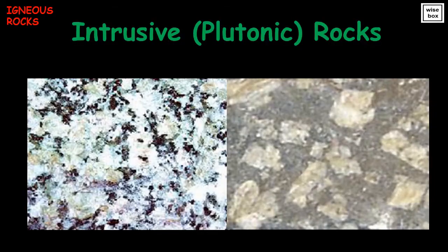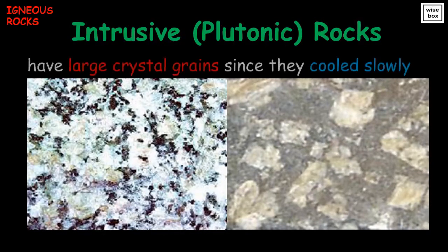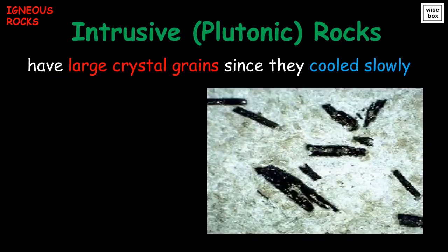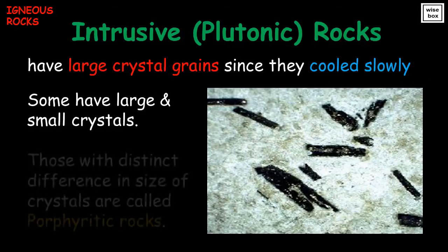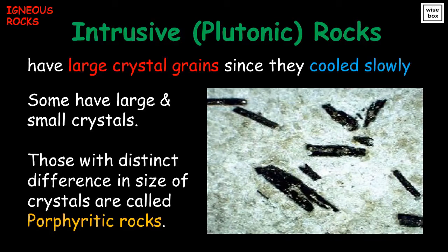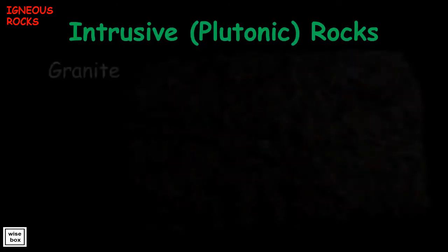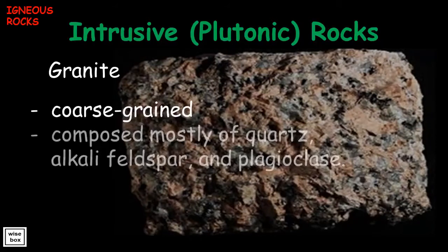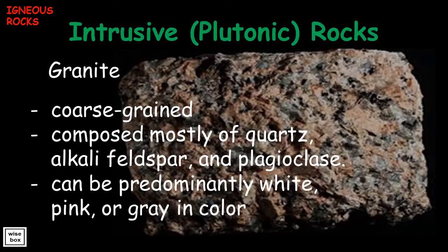Intrusive rocks have large crystals and are coarse-grained. Some have large and small crystals; those with a distinct difference in crystal size are called porphyritic rocks. One example of an intrusive rock is granite: it is coarse-grained, composed mostly of quartz, alkali feldspar, and plagioclase, and can be predominantly white, pink, or gray in color.